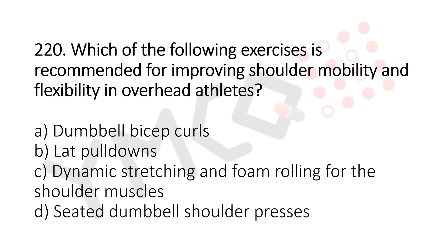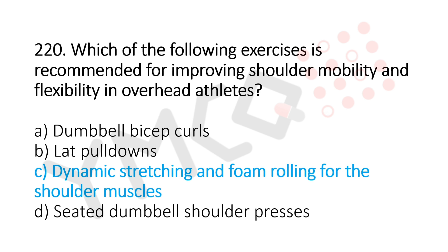Question 220: Which of the following exercises is recommended for improving shoulder mobility and flexibility in overhead athletes? Option A: dumbbell biceps curl. Option B: lat pulldown. Option C: dynamic stretching and foam rolling for the shoulder muscles. Option D: seated dumbbell shoulder press. The answer is option C, dynamic stretching and foam rolling for the shoulder muscles.